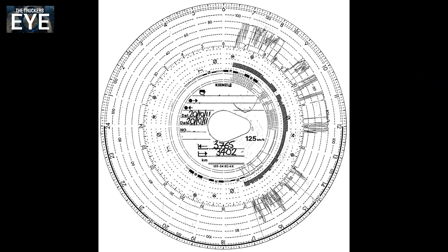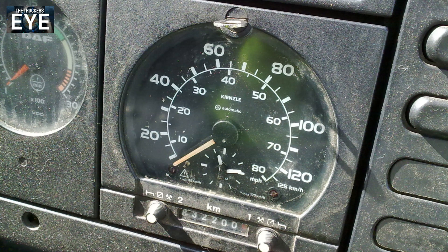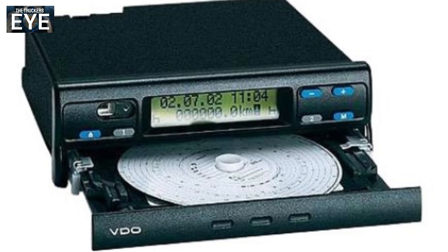Before digital tachographs, we used analog charts. You can see an example of one on screen — it shows the speed trace, which still exists on your digital cards. Some drivers used to call these charts 'frisbees.' Drivers would insert their tachograph chart into a head unit like the one displayed. Unlike today's trucks, those tachographs never showed how much driving time you had done — you had to track it all manually. One of the worst things about analog heads was if the key went missing — that was a massive problem. Later in the 1990s, analog tachograph heads started to change appearance, though the principle of inserting a chart remained the same.